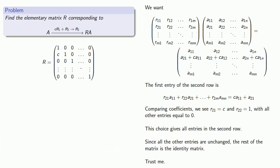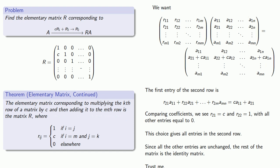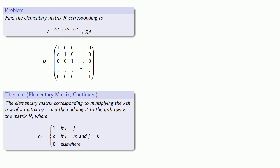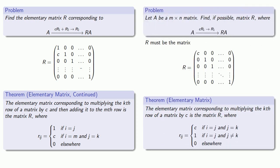We can generalize this result: the elementary matrix corresponding to multiplying the kth row of a matrix by C and adding it to the mth row is the matrix R whose entries are 1 if i equals j — so it looks like the identity matrix — with the exception of an entry C where i equals m and j equals k. Notably, as long as we avoid row interchanges and work from top to bottom, these elementary row operations correspond to lower triangular matrices.